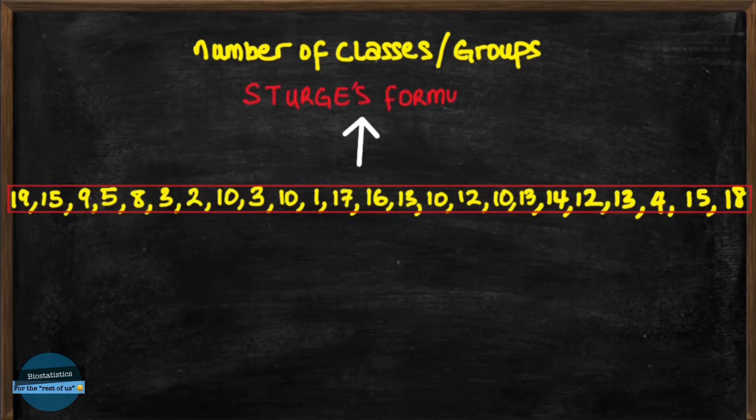I have made a separate video on how to use the Sturges formula as a guide to determine the optimum number of groups when constructing a group frequency distribution. You can find the video in the card above or in the description of this video. For this data, the number of groups that we desire is 6 groups.